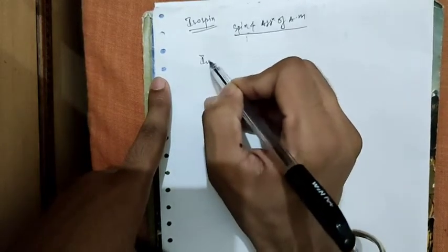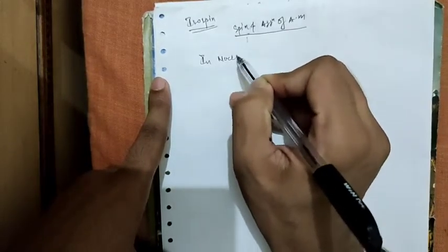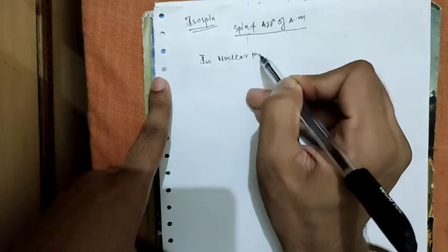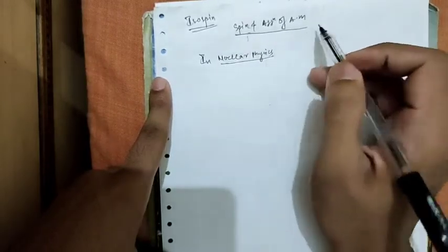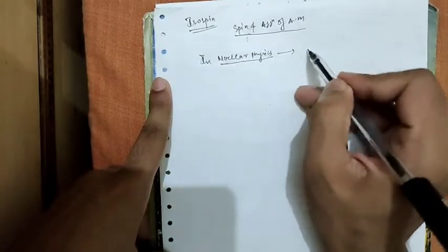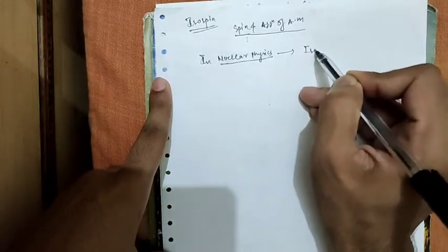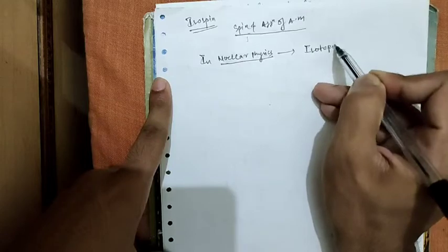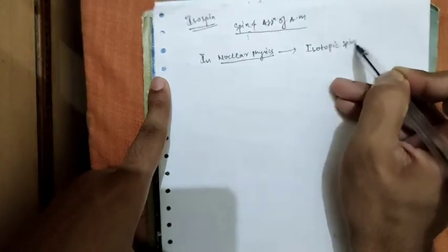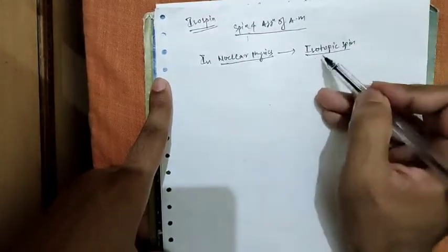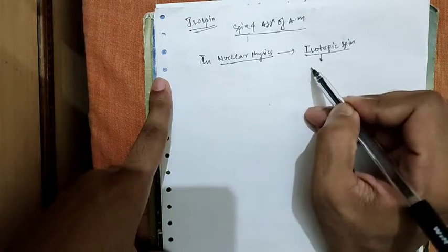in nuclear physics, we have one quantity which is named isotopic spin. This is represented by a set of operators.